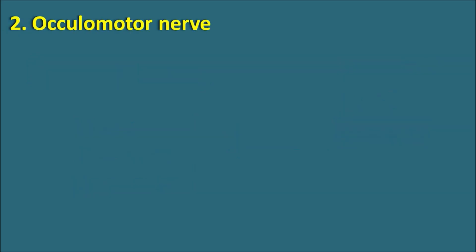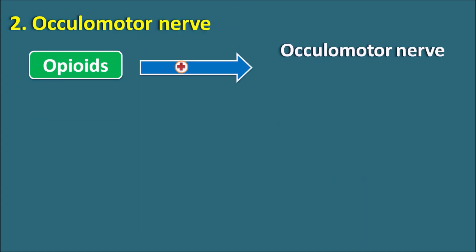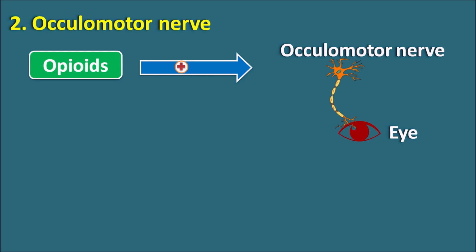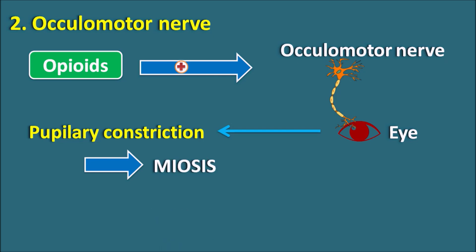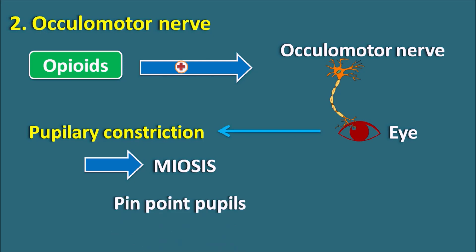The second stimulatory target is the oculomotor nerve. Opiates can stimulate the oculomotor nerve, which supplies to the eye. When stimulated, it acts on the eye to produce pupillary constriction. Parasympathetic fibers are supplied along with the oculomotor nerve, and just like the parasympathetic system, opiates can produce pupillary constriction — miosis. This is very important because many drugs that produce respiratory depression produce mydriasis (pupillary dilation), but opiates are the only category producing respiratory depression along with pupillary constriction. Opiates decrease the pupillary size, producing the condition of pinpoint pupils, which is used to identify opiate use.